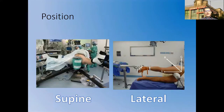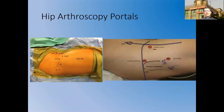Hip arthroscopy can be performed either in the supine or lateral position, both having advantages and disadvantages. The speaker prefers the supine position, in which a bulky or large perineal post is used to provide both lateral and distal traction, increasing the intra-articular space within the hip joint.